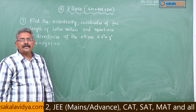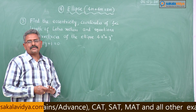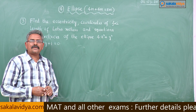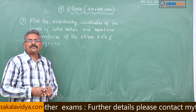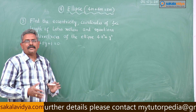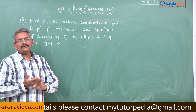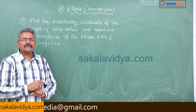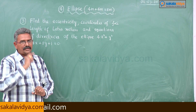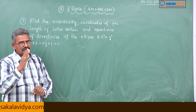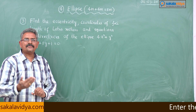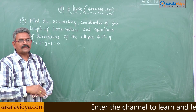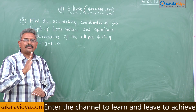First, let us put the given equation of the ellipse in the form (x - h)² / a² + (y - k)² / b² = 1. Then find a², b², h, and k values. If a > b, it is a horizontal ellipse; if a < b, it is a vertical ellipse.